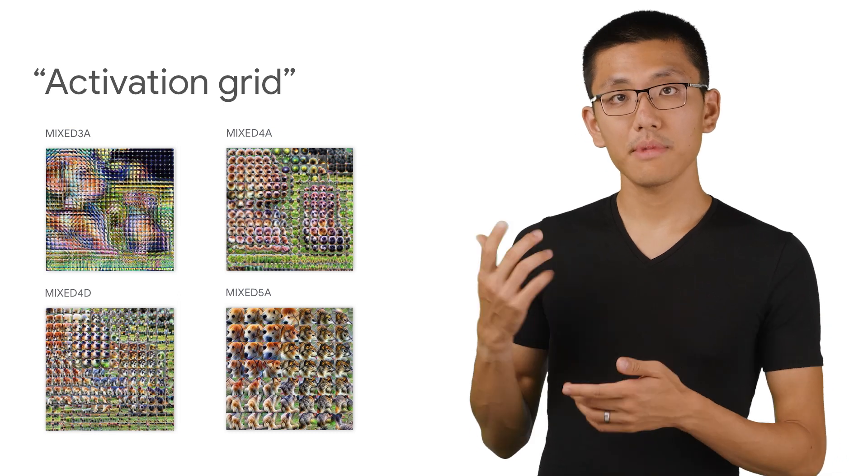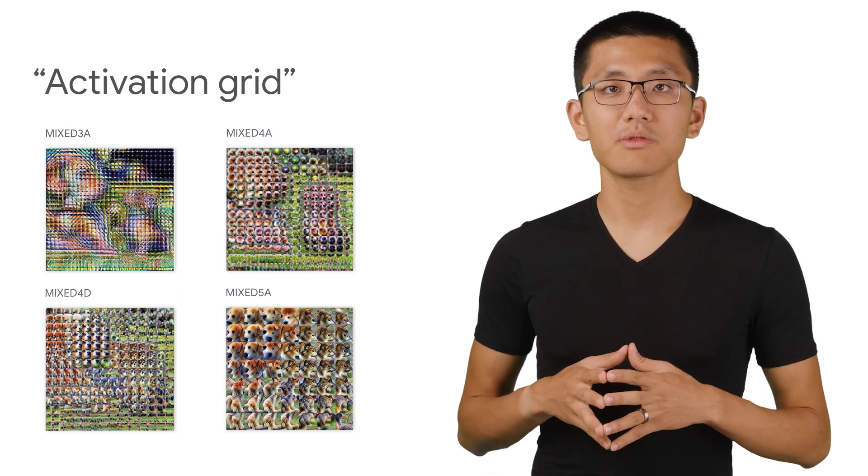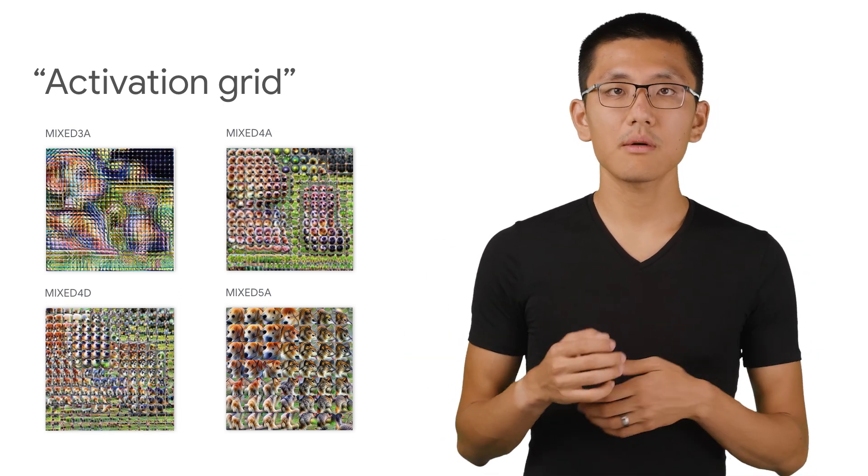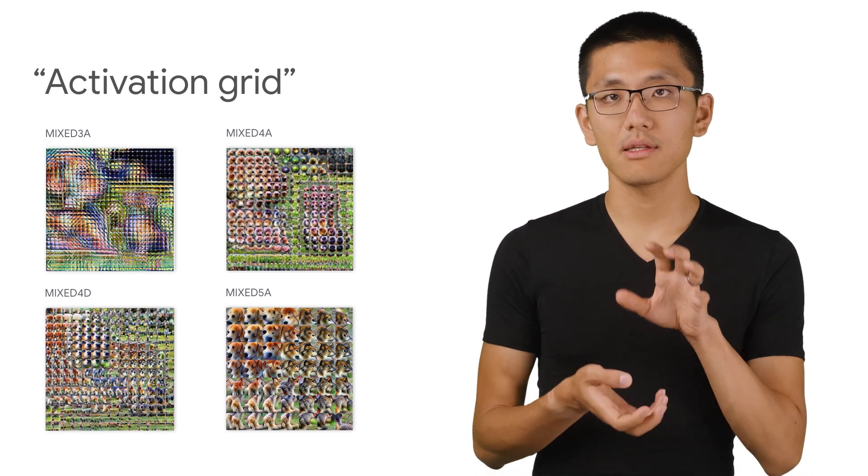Earlier layers, like Mix 3A, they show us the edges and patterns that still mildly resemble the original image, while later layers are much more identifiable as the animal body parts that are being recognized in that part of the image.